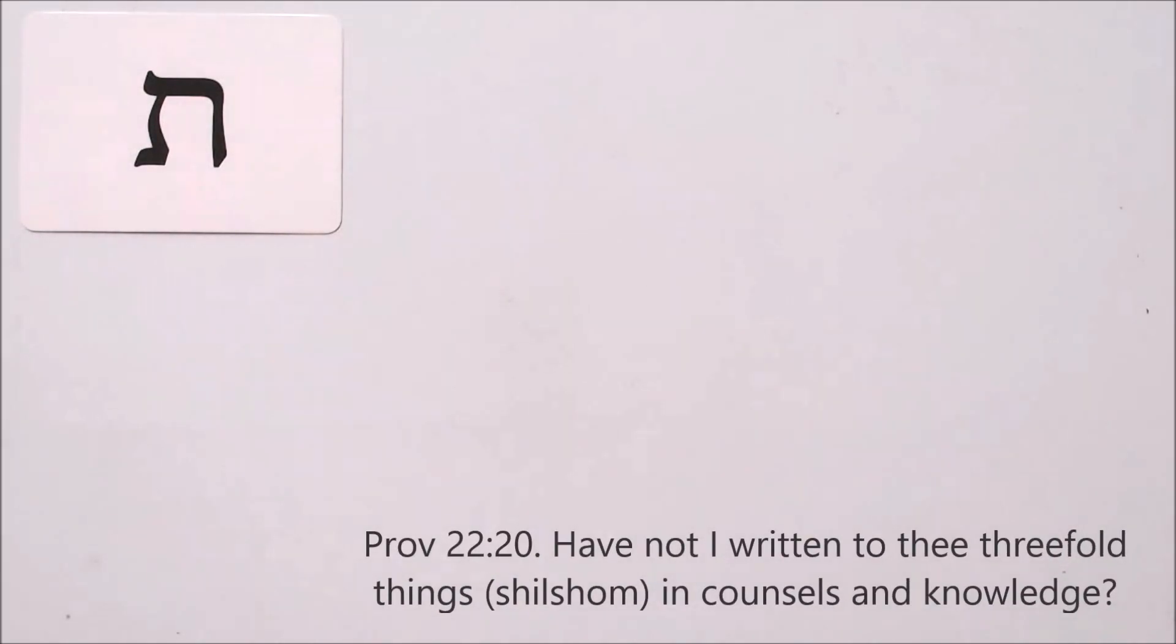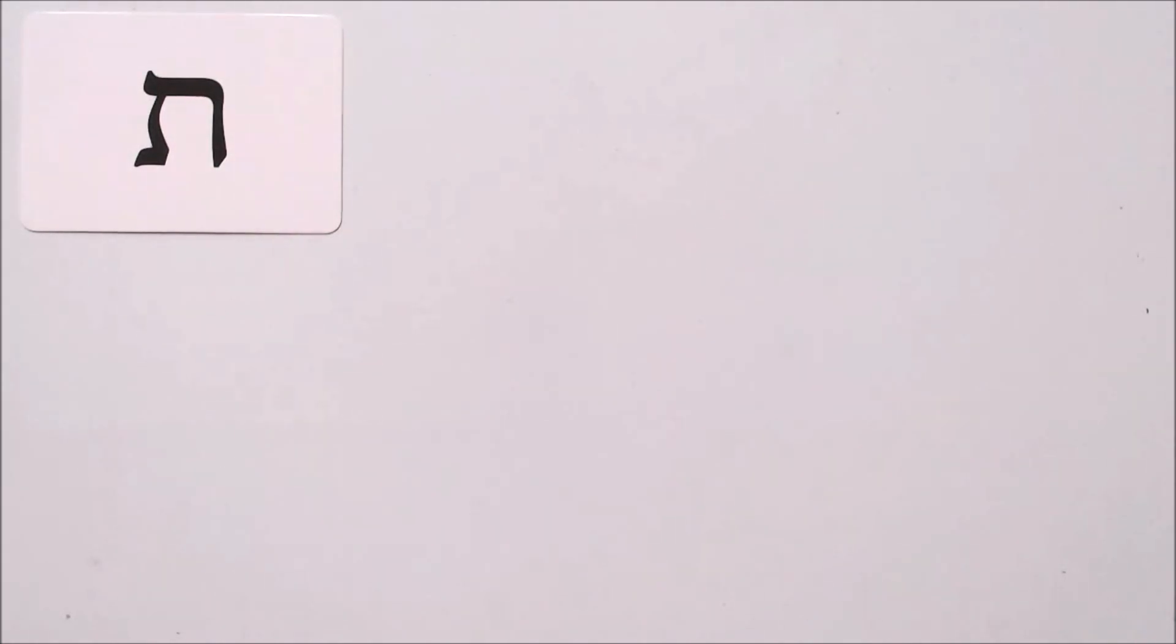This is fascinatingly demonstrated by Ibn Ezra using the numeric value system coupled with the belief that the entire Aleph Bait is composed of sets of three letters, groups of three throughout the Aleph Bait. He translates Proverbs chapter 22 verse 20 in the following way: Have not I written to thee threefold things in counsels and knowledge? And this phrase threefold things is seen by Ibn Ezra to be a reference to the sets of three with which the Torah is composed.